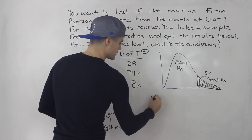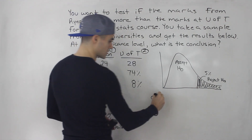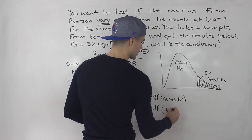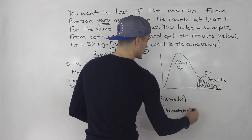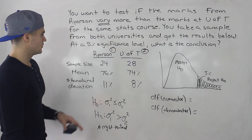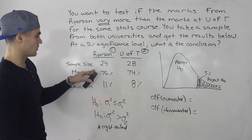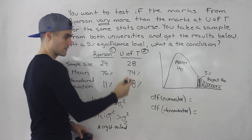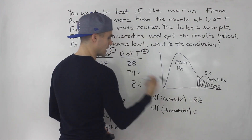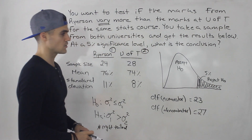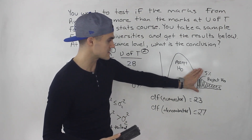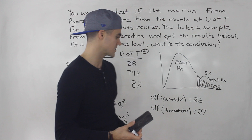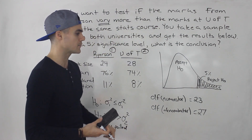The F distribution depends on two degrees of freedom: the degrees of freedom of the numerator, and the degrees of freedom of the denominator. Since Ryerson is population one, that represents the degrees of freedom of the numerator — it's the sample size from population one minus one. So 24 minus one gives us 23. And 28 minus one gives us 27. We need to look up the F distribution with 5% in the right-tailed area, degrees of freedom numerator 23, denominator 27.